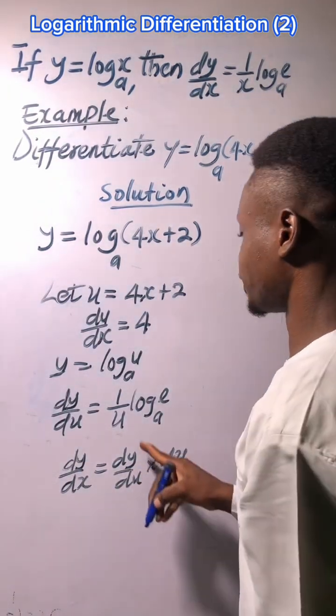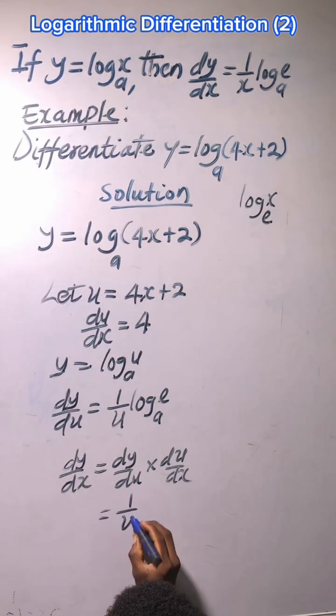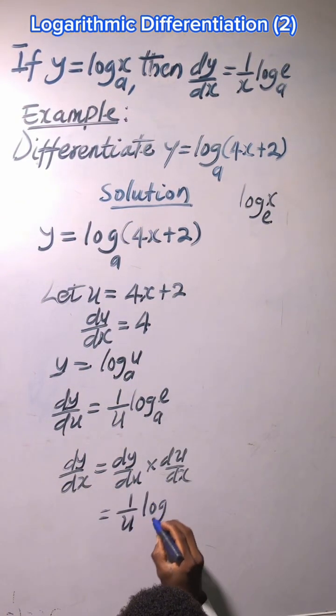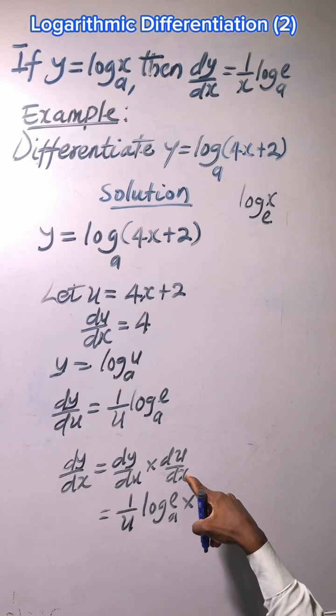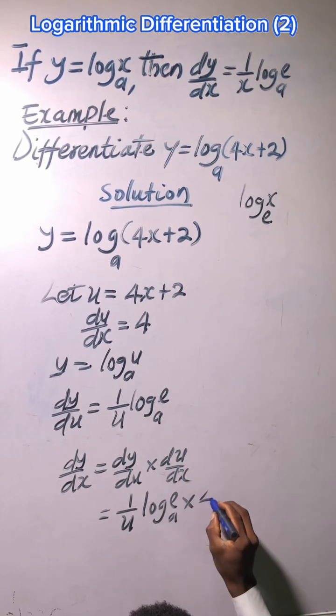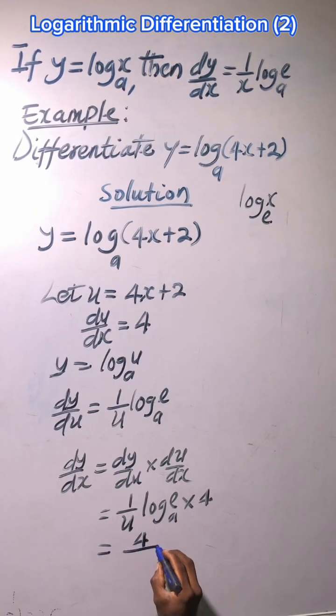dy/du has been given as this, which is one all over u times log e in base a, times du/dx which is already 4. So we have 4 go up, we have 4 all over...